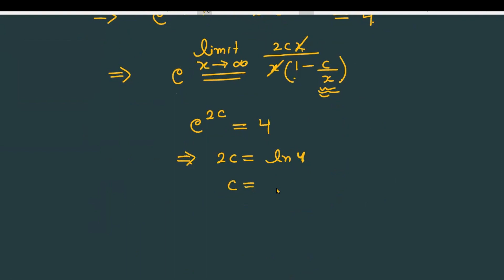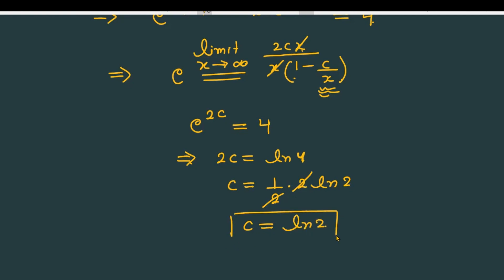To find the value of c: 2c equals ln 4, which can be written as 2 ln 2. The 2s cancel, and finally the value of c is ln 2. This is the answer for the given problem.